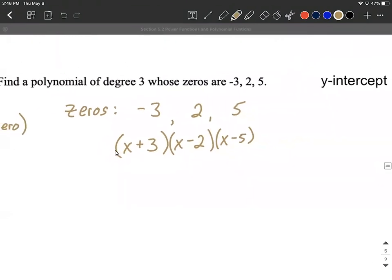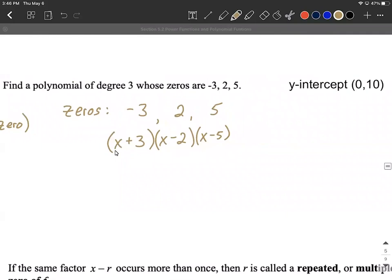Now the thing that we haven't taken into account here is one the degree. Well each one of these has what we refer to as a multiplicity of one. So if you add these multiplicities of one together one plus one plus one adds up to three it'll be a degree three polynomial.